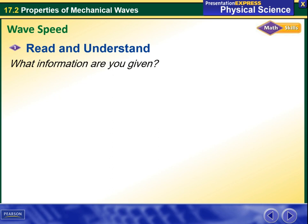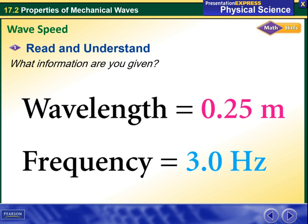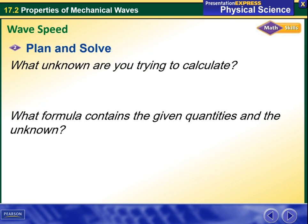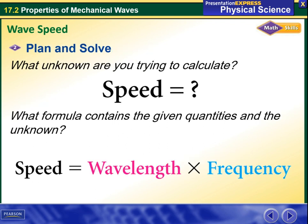So what we're going to do is understand what information is given to us. What's given is wavelength equals 0.25 meters, while frequency equals 3 hertz. The unknown we're trying to calculate is the speed, and we have a formula that says speed equals wavelength times frequency.